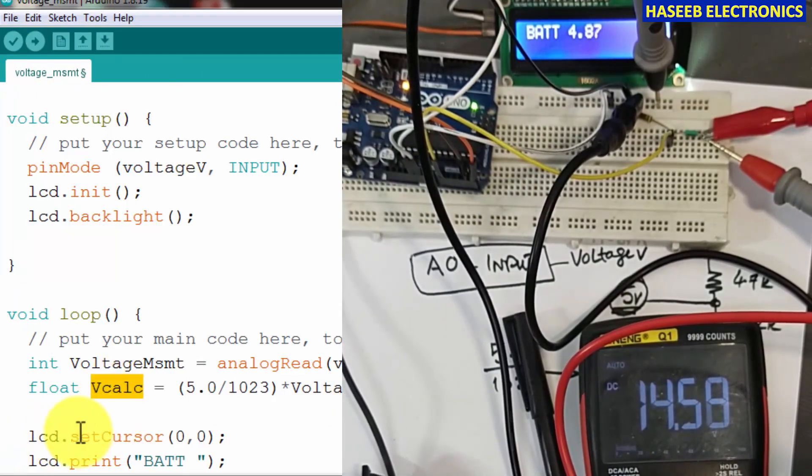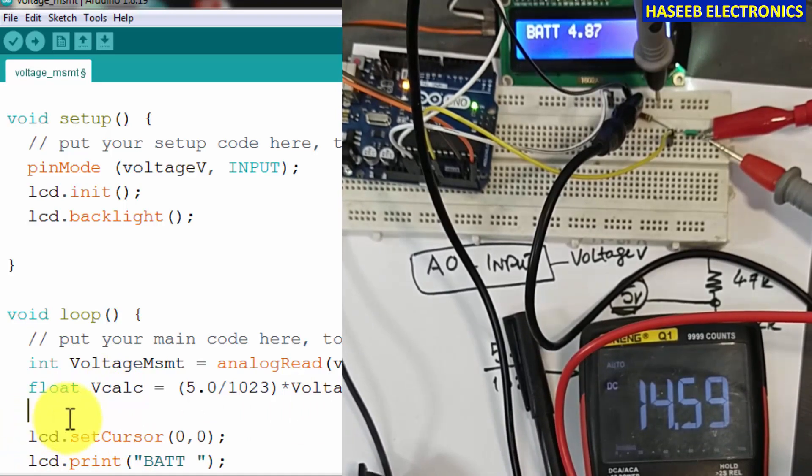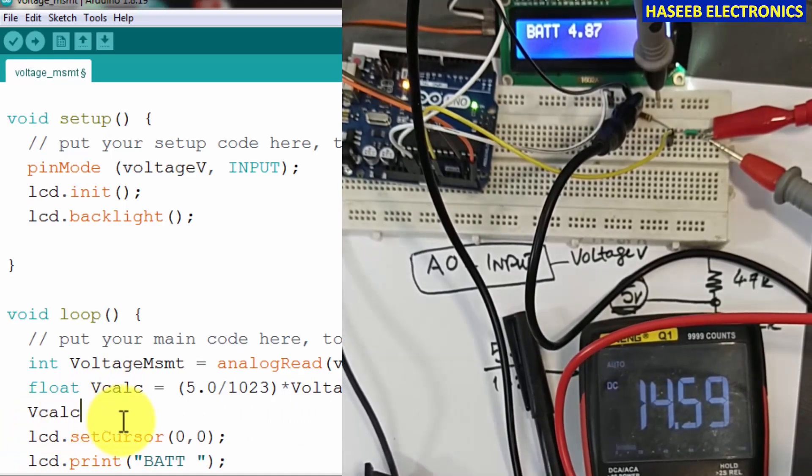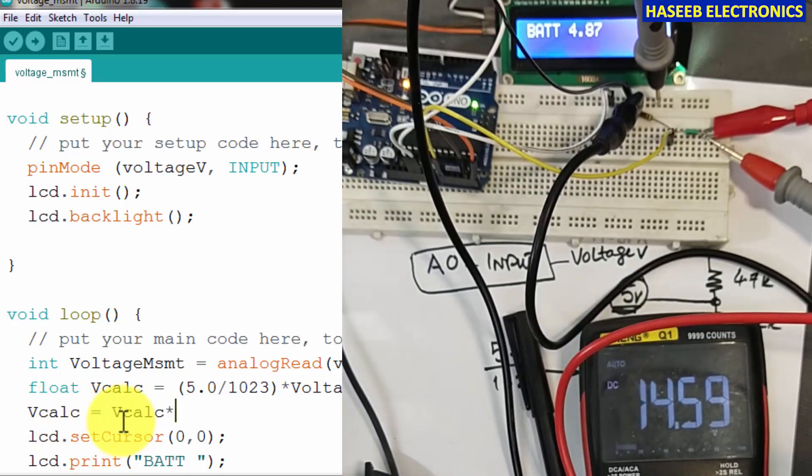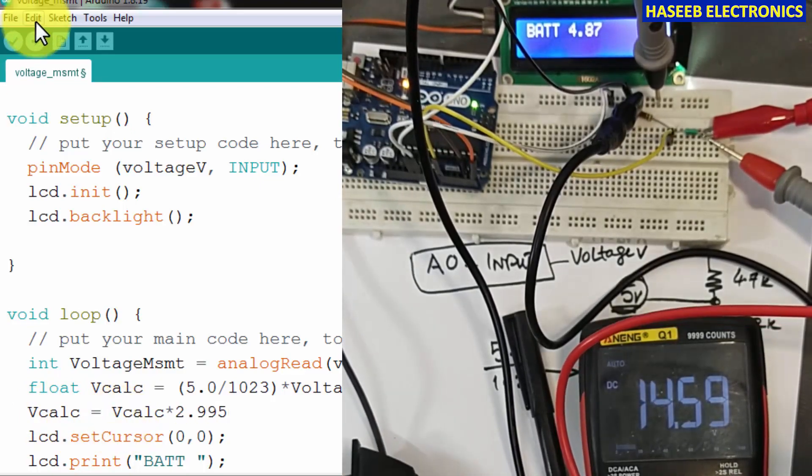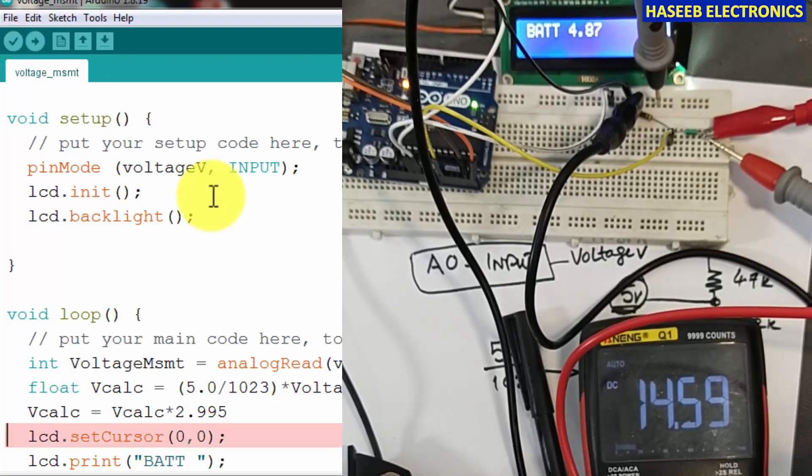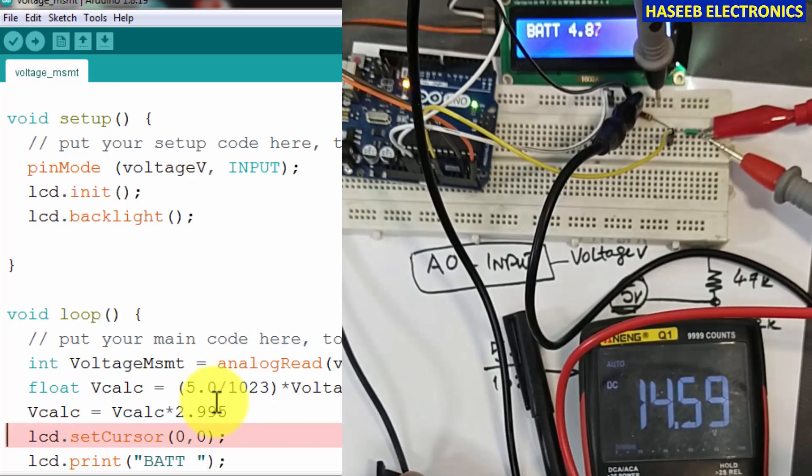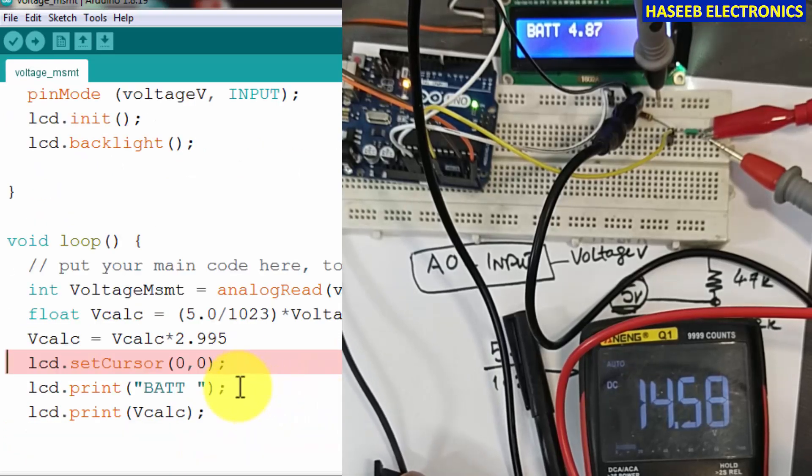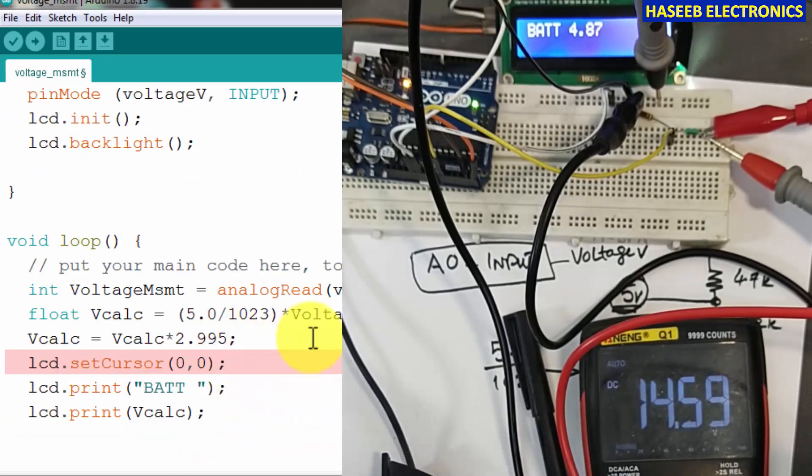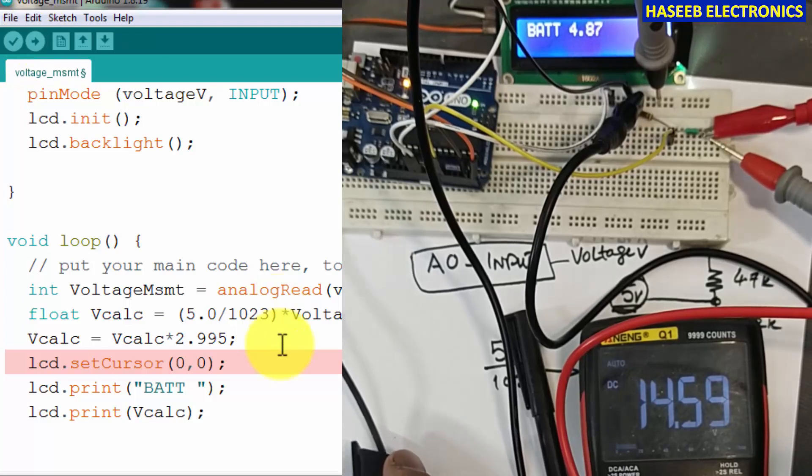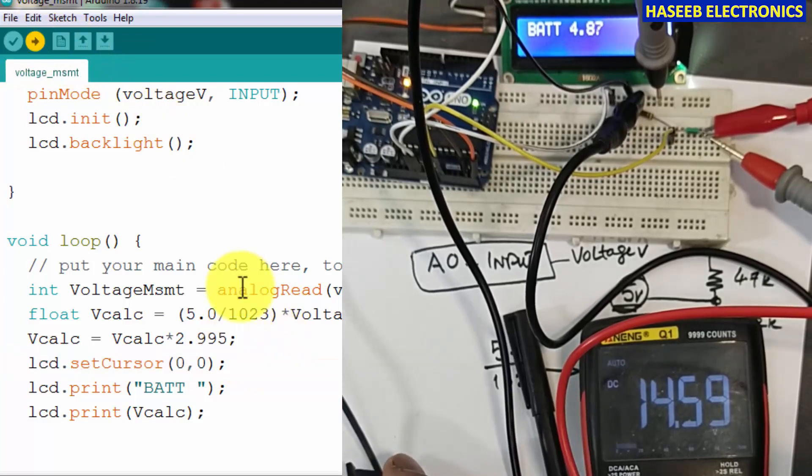So in our software now we will create V calculation calculated voltage equals V calculated multiplied by 2.995. Upload it.